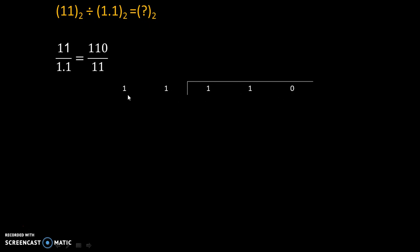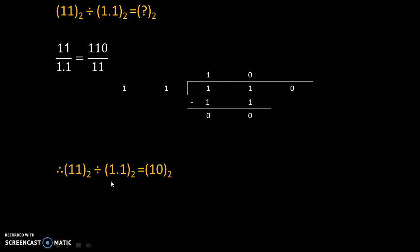So we have 110 divided by 11. 11 multiplied by 1 gives 11. Subtraction gives 00. Only 0 remains, which we bring down. This gives us our final answer. Therefore, 11 base 2 divided by 1.1 base 2 equals 10 base 2.